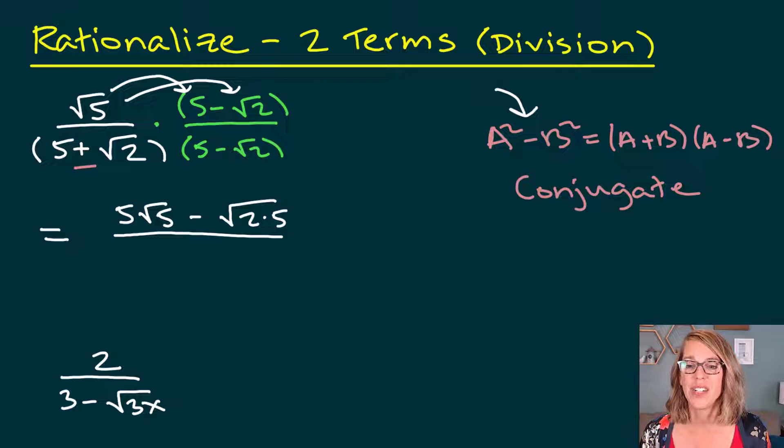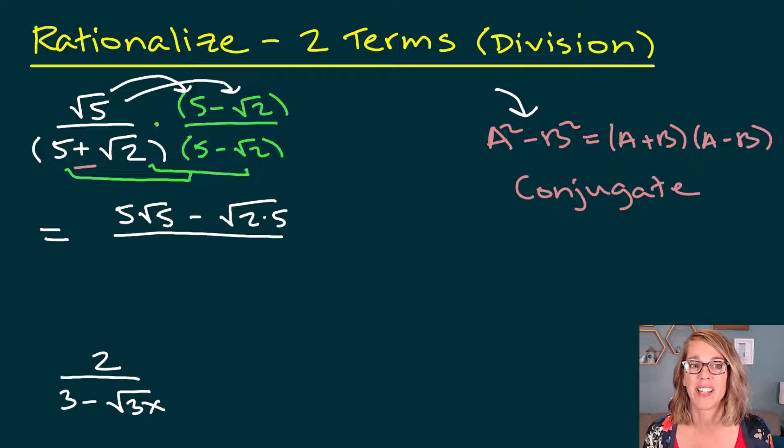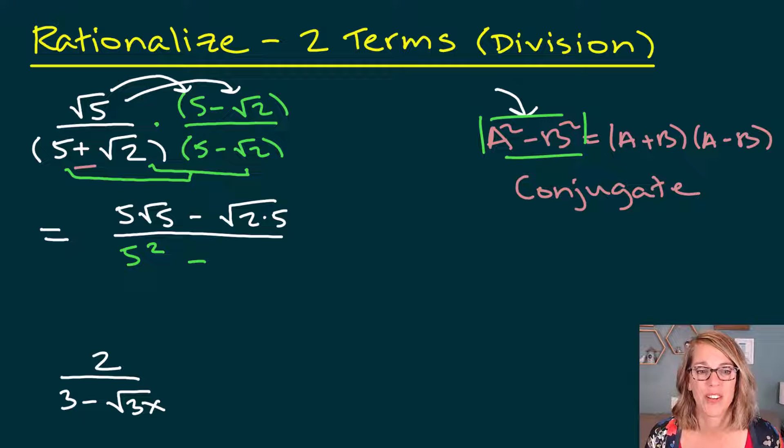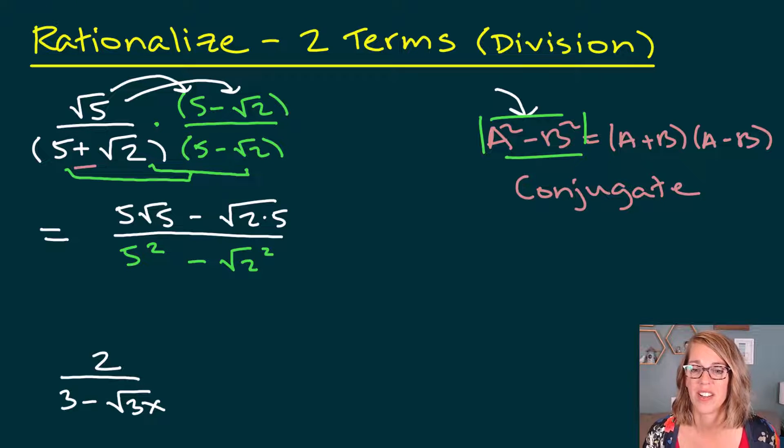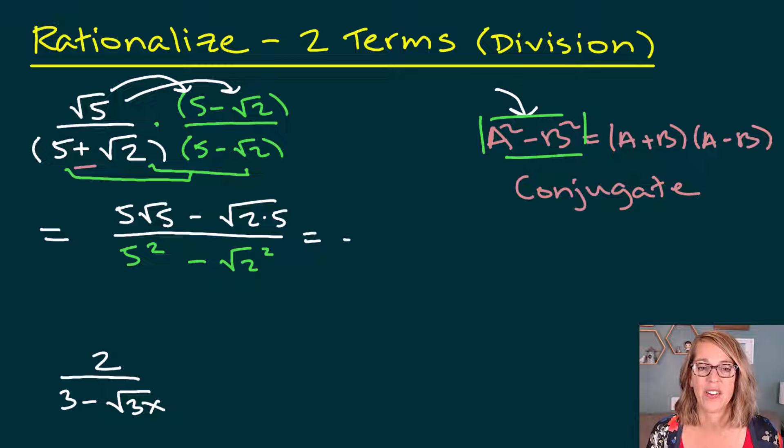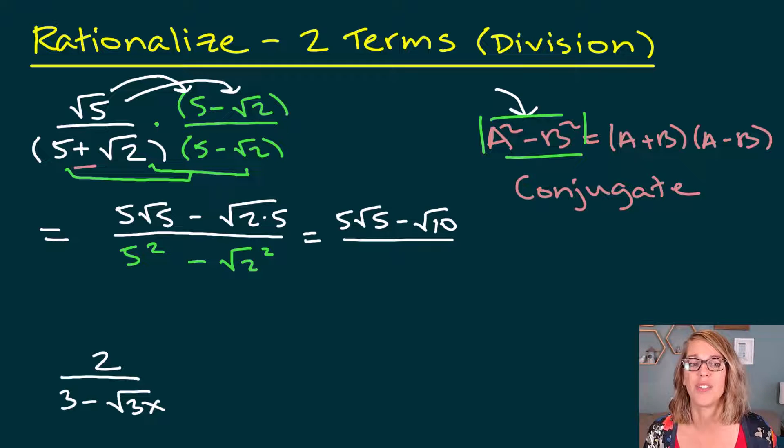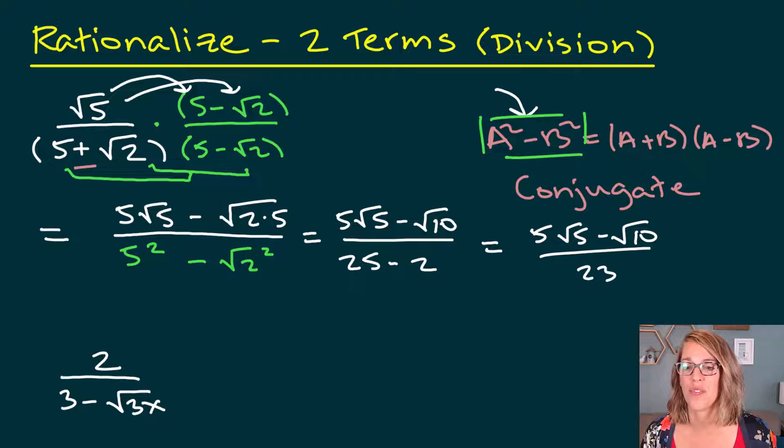Now in our denominator, I could FOIL this thing out, first, outer, inner, last. But I know that I'm going to end up with the first thing squared, so 5 squared minus, and this is that difference of squares, minus the last term squared. So minus radical 2 squared. So what do we end up with? In our numerator, not a lot to do. I've got that 5 radical 5, but I can multiply 2 times 5 and I get 10 if you didn't already do that. In the denominator, I have 5 squared, which is 25, minus radical 2 squared, which is 2. How nice is this? And just one more simple step to get to that solution. 5 radical 5 minus radical 10, all over 23. So the key is to multiply by the opposite of whatever you've got in that denominator. Let's take a look at this next one.